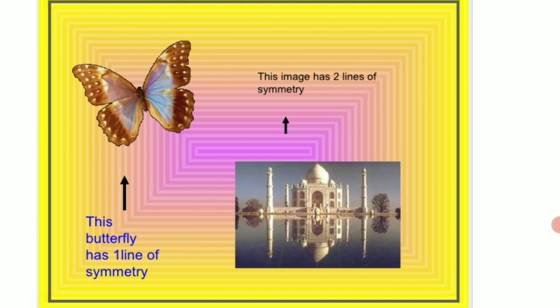Now coming to the third slide children, here you can see the picture of a butterfly and Taj Mahal. In Taj Mahal the image has two lines of symmetry, the vertical and the horizontal, whereas in the butterfly it has only one line of symmetry, that is the vertical symmetry.